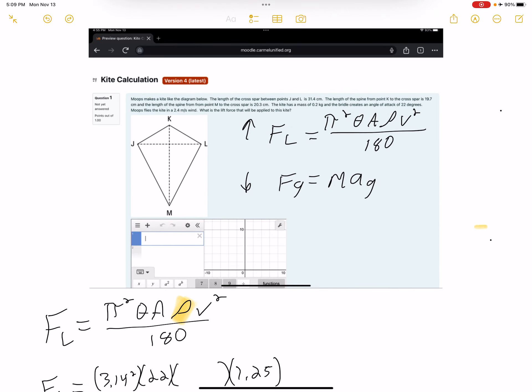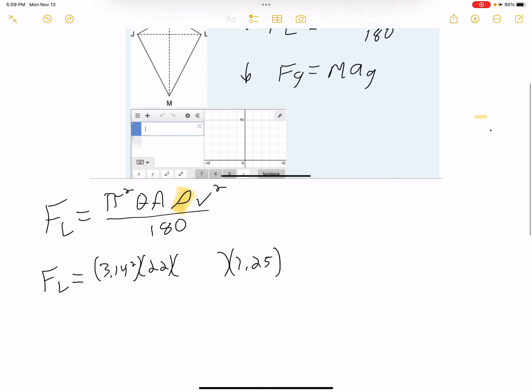So down here, I'm going to put 2.4 squared. And all of this is over 180. So we're all looking pretty good so far. I just need to find that area, that A.